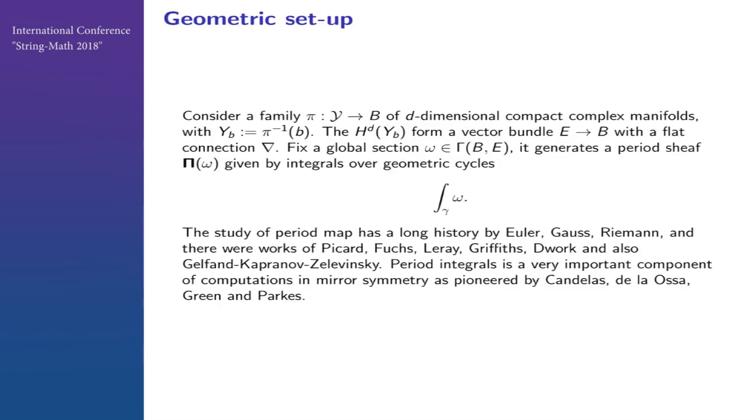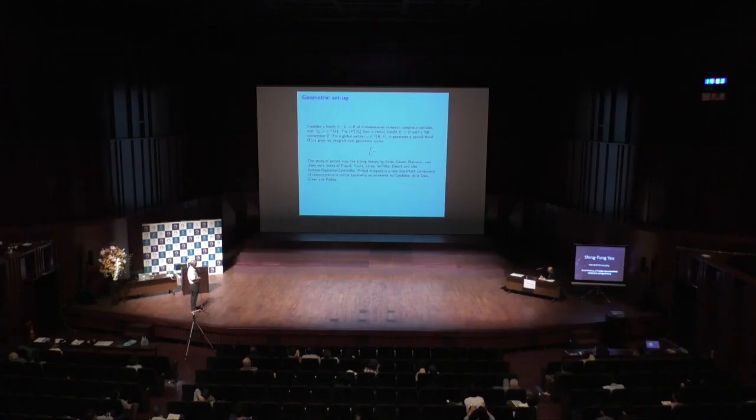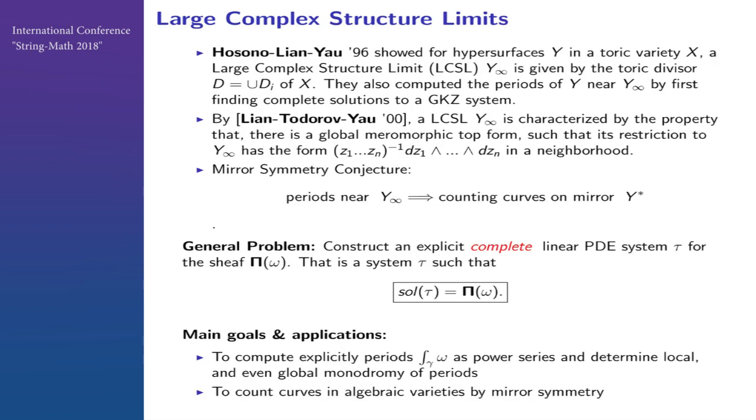A very important question is the period calculation, which is related to old classical literature starting with Euler and others. Given a holomorphic n-form, which is unique in Calabi-Yau geometry, we want to know the integral of it over cycles. This is a very important component of the computation. For manifolds from complete intersection, in 1990 and 1996, we studied hypersurfaces and looked at what the large complex structure limit is. We call it Y-infinity given by some divisor.